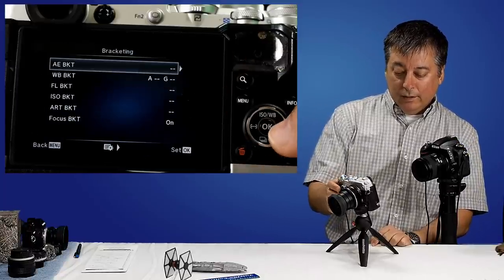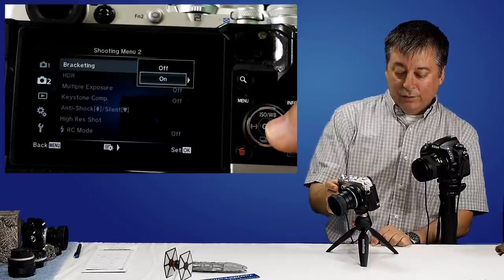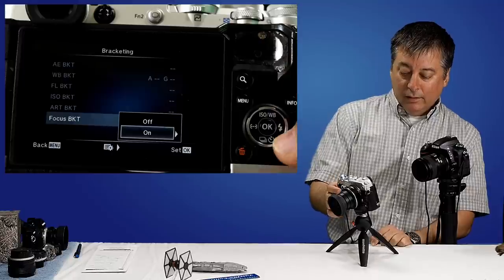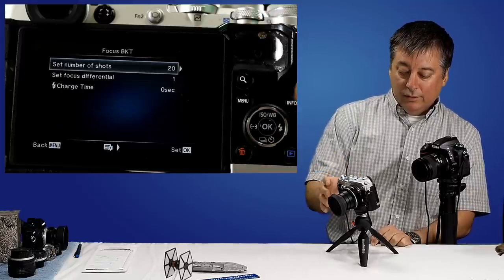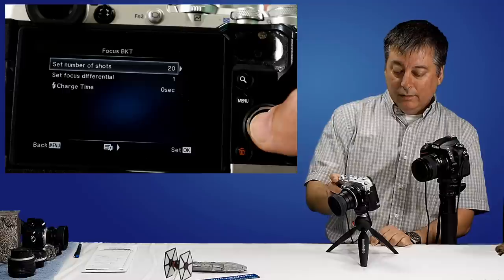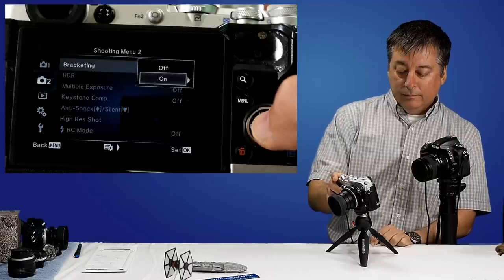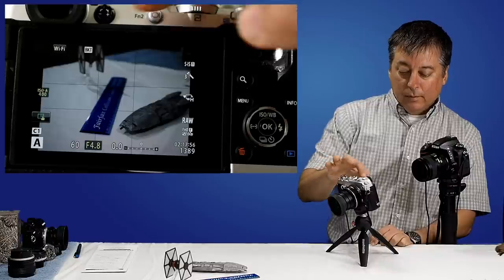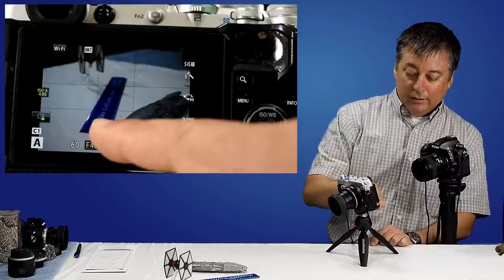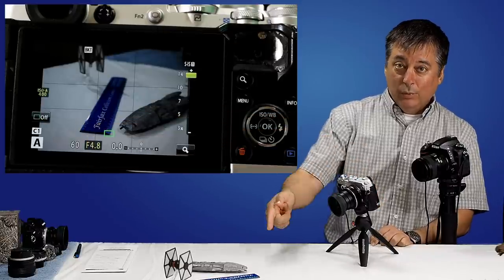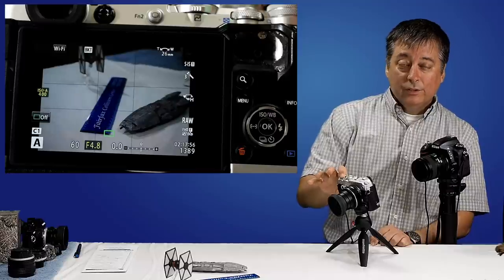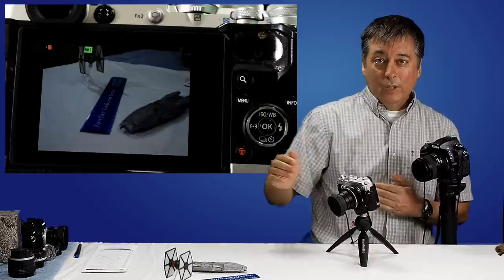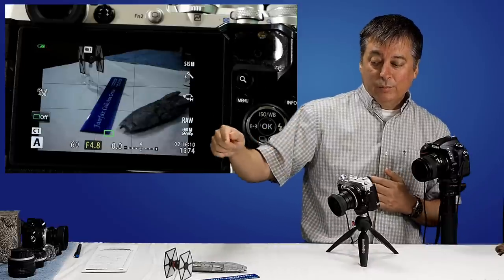So let's go ahead and turn the bracketing back on. I'm going to double check to make sure my focus bracketing hasn't changed. Scroll down right click. Right click again. And you have 20 shots, one increment. And we're good. Now the bracketing icon is on. I'm going to set my focus point here to where I pointed to before. And I'm just going to click the shutter button once.